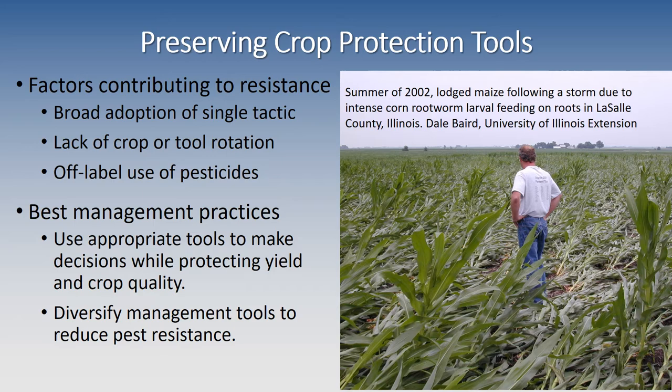With that said, we also have to consider how we preserve our crop protection tools. There are a number of factors that contribute to resistance. The broad application of a single tactic — demonstrated here in the image on the right — is one example. Crop rotation in the Midwest had been used for three or four decades on massive acreages, and as a result, the Western corn rootworm developed a variant that overcame crop rotation. This is a result of the damage following a windstorm.